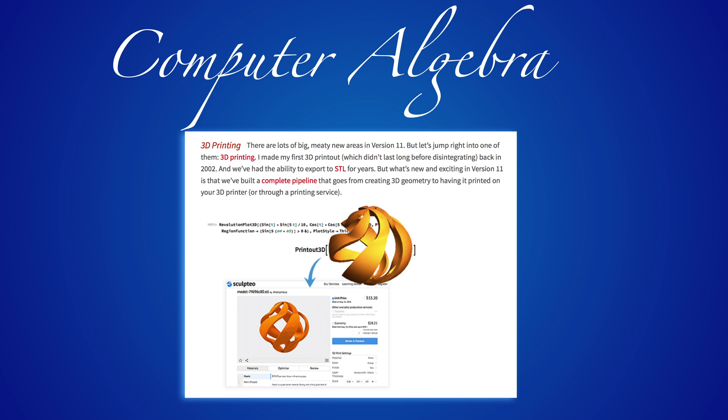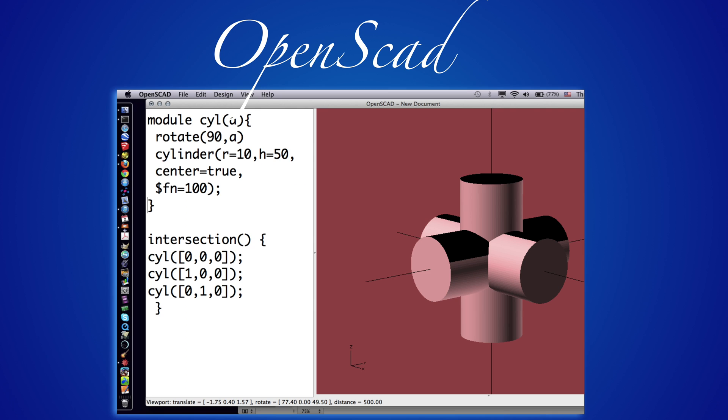Computer algebra systems change and evolve also rapidly. Mathematica 11, for example, natively already allows to print to a printing service.